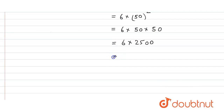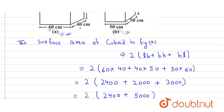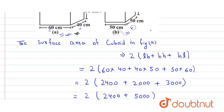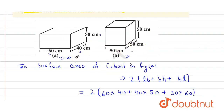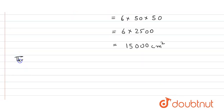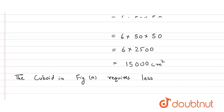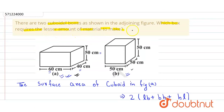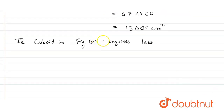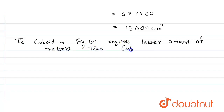Multiplying, we get 15,000 centimeter square. We can see that the cuboid in figure A has the lesser surface area than the cube in figure B. So the cuboid in figure A requires less material because it has less surface area than the cube in figure B. That's our answer.